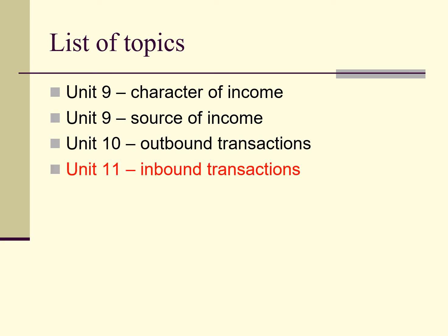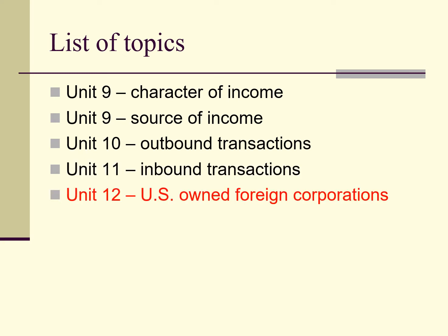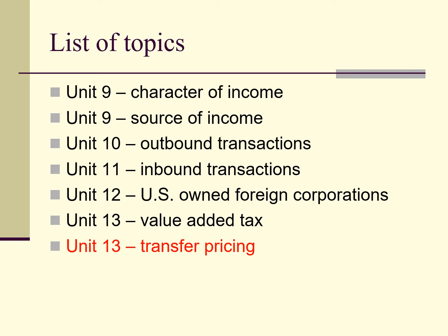In Unit 11 we turn things around and study the rules for U.S. taxation of inbound transactions, which involves sales by foreign companies to customers in the United States. In Unit 12 we examine the special rules for U.S. taxation of foreign corporations owned by U.S. taxpayers. In Unit 13 we study European value-added tax, focusing mainly on the tax as it relates to U.S. companies. In Unit 13 we will also briefly study transfer pricing as it relates to electronic commerce.